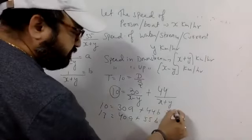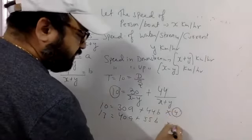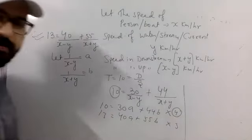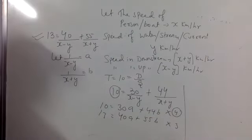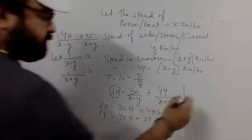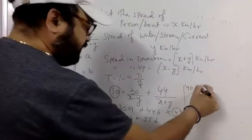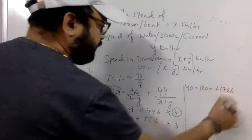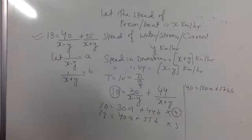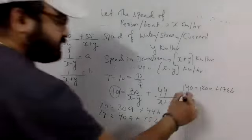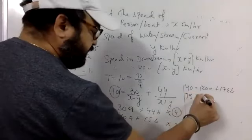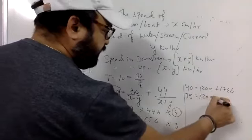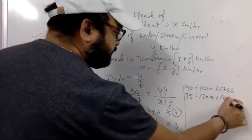Yes sir. So maine isko 4 se multiply kar diya aur isko 3 se. Agreed? So upar wala equation ho gaya 40 is equal to 120a plus 176b? Yes sir.